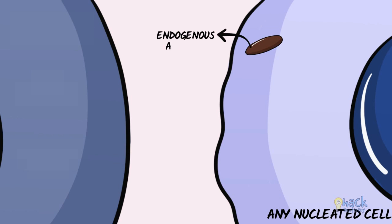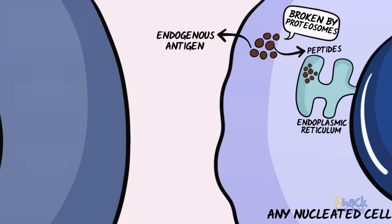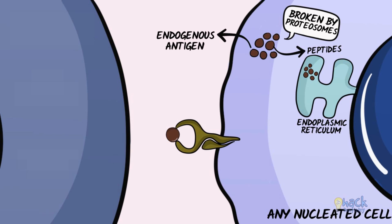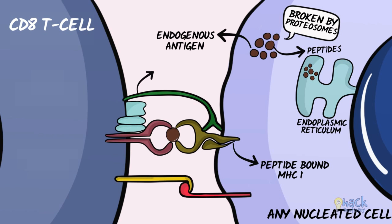An endogenous antigen like a virus or a tumour antigen is broken down into peptides by proteosomes inside the cell and transported to the endoplasmic reticulum. Here, the MHC 1 molecule captures the peptide and is then transported to the plasma membrane, where it displays the peptide on the cell surface ready for recognition. The peptide-bound MHC 1 molecule is recognized by a CD8 T cell, with the T cell receptor interacting with the peptide and the CD8 co-receptor binding with the MHC 1 molecule.